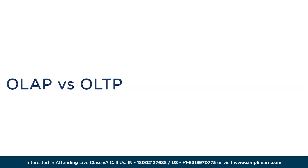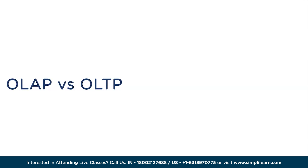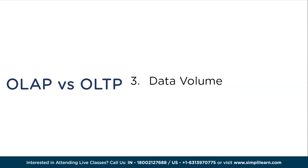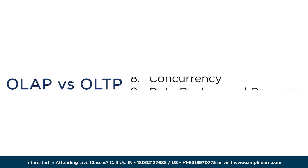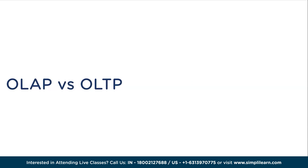Understanding the distinctions between OLAP and OLTP is crucial for organizations to choose the appropriate data processing approach based on their specific requirements. Today we will understand the difference between OLAP and OLTP by going through the following details: purpose, data structures, data volume, response time, query complexity, data modification, data granularity, concurrency, data backup and recovery, and finally, system design.